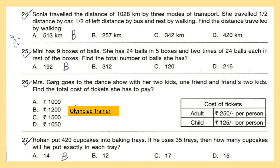Question 25: Mini has 9 boxes of balls. She has 24 balls in 5 boxes and 2 times 24 balls in each of the rest of the boxes. Find the total number of balls she has.